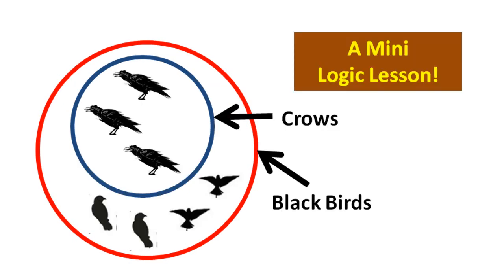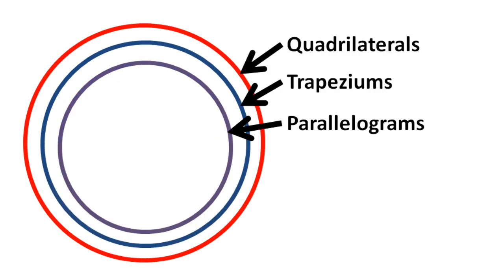Let us stop for a small logic lesson. All crows are blackbirds, but all blackbirds are not crows. So crows are a subset of blackbirds — there could be some blackbirds which are not crows, but all crows are blackbirds. Similarly, all trapeziums are quadrilaterals but all quadrilaterals are not trapeziums.